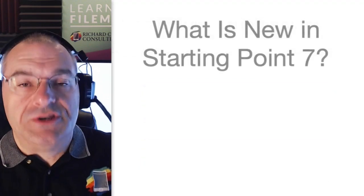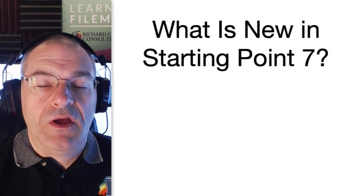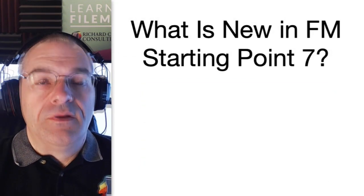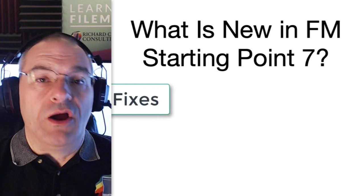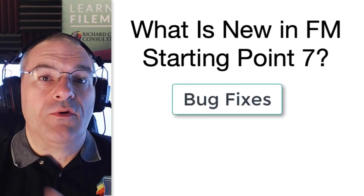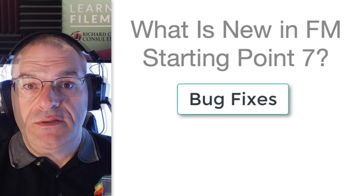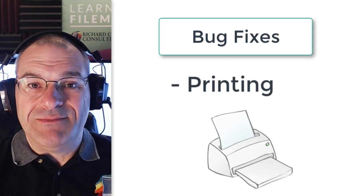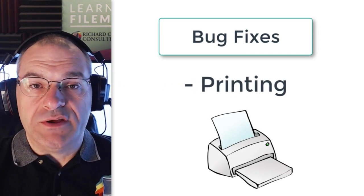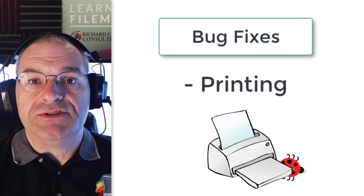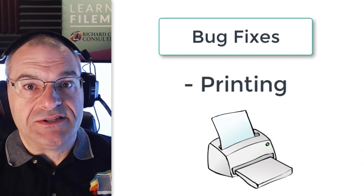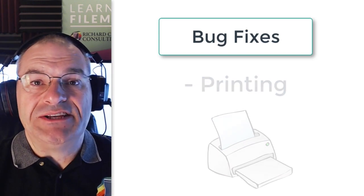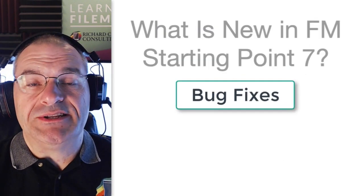So what new features are in Starting Point 7? First off, let me cover the boring stuff. We actually have a large number of bugs that were fixed in Starting Point 7, and a lot of those bugs have to do with the printing of estimates and invoices, especially the multi-page invoices. Those areas have been tuned up and tested pretty rigorously.